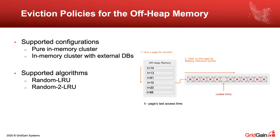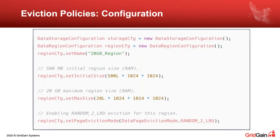The difference between Random LRU and Random-2 LRU is that with Random-2, Ignite tracks two timestamps per page. This prevents a mistake where a frequently accessed page happens to have an old primary timestamp. For example, if a page with timestamp 10 is accessed every five seconds while other pages are accessed only once a minute, Random LRU might mistakenly evict it. Tracking two timestamps gives a much better indication of which page should be evicted first.